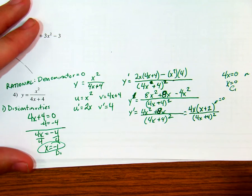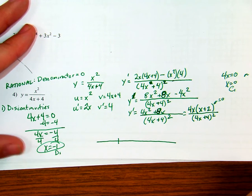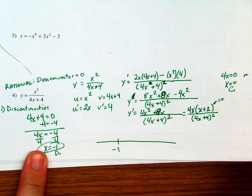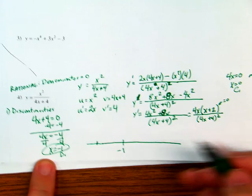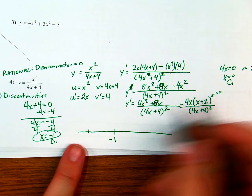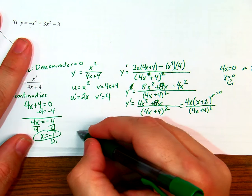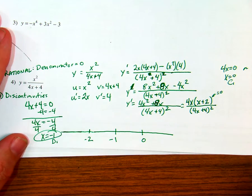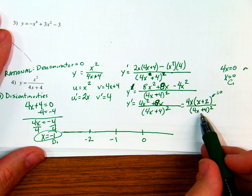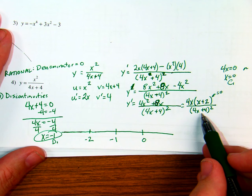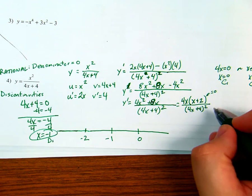Now I create a number line. I have the discontinuity at negative 1, c2 at negative 2 — so that goes to the left — and c1 at 0 — which is to the right. Notice the denominator of the derivative is always squared, so it's always positive, which is nice. That means I only have to worry about the sign of the numerator.